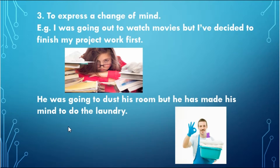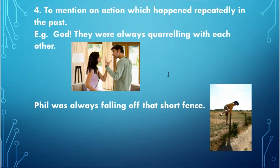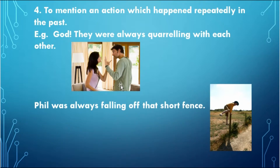The phrases 'to finish' and 'to do' are in infinitive form and don't carry tense. We are concerned only with 'was going out' and 'was going to' — those are in past continuous. It is used to express a change of mind. Next use: to mention an action which happened repeatedly in the past. For example: 'They were always quarreling with each other' — they used to do it on a regular basis. 'Phil was always falling off that short fence' — it happened with him every time. So past continuous is used to mention an action which happened repeatedly in the past.